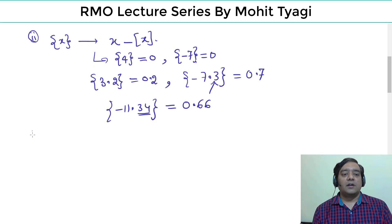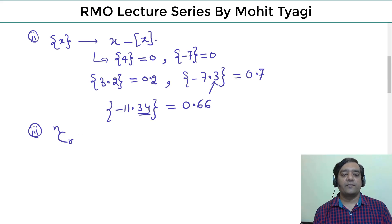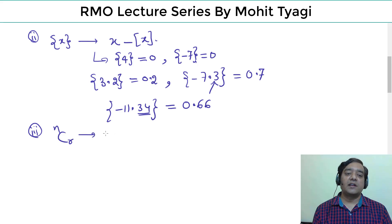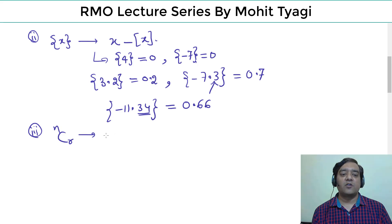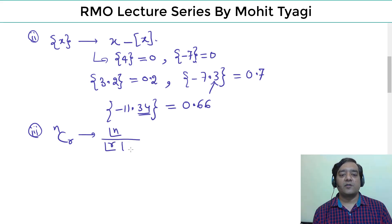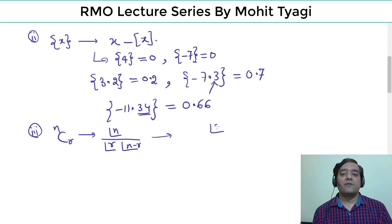Third point: nCr is the number of ways of selecting r objects out of n objects. It is written as n! divided by (r! × (n−r)!). I hope you know factorials — factorial of 3 means 1×2×3.